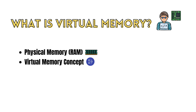Virtual memory extends the available memory beyond the physical RAM by using a combination of RAM and disk space. The operating system creates an illusion for applications that each process has its own dedicated space in memory, known as virtual address space.